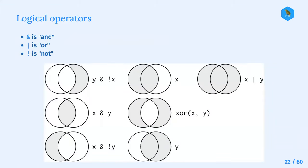There are also logical operators you can use. The ampersand is 'and', the vertical pipe is 'or', and the exclamation point is 'not'. This image from the book shows the different kinds of operators you might use depending on what you're looking for.